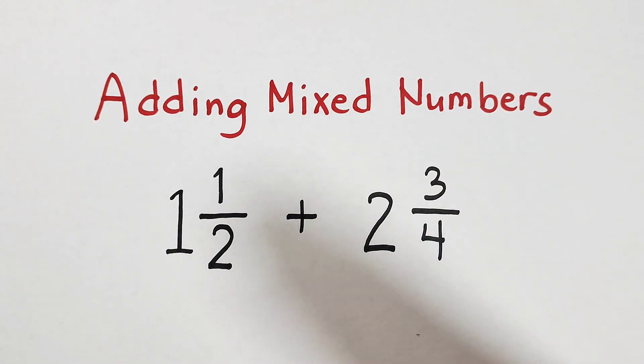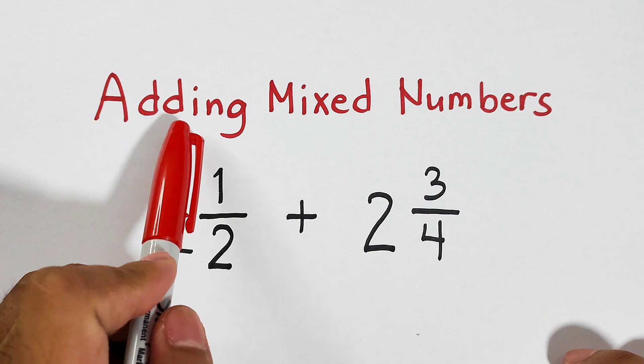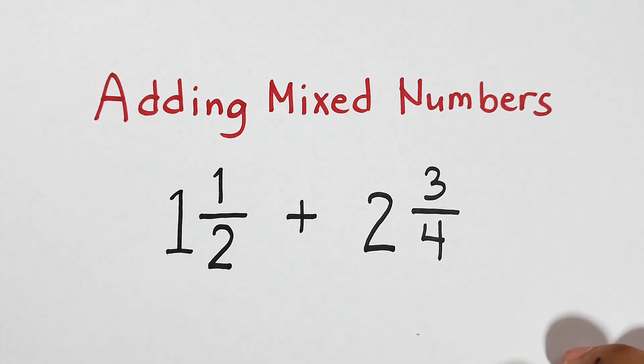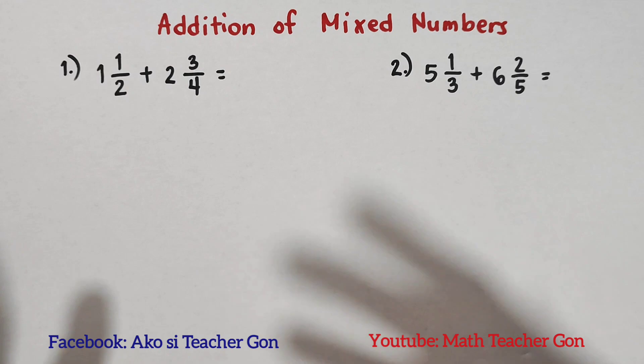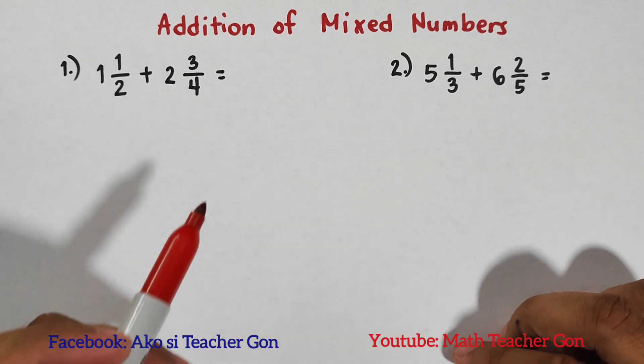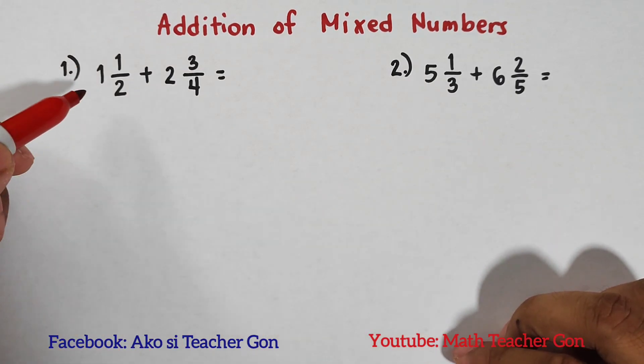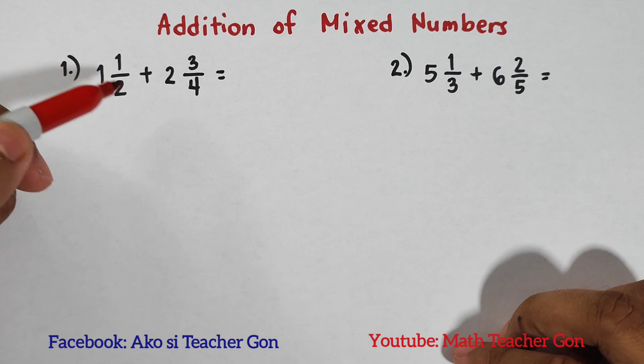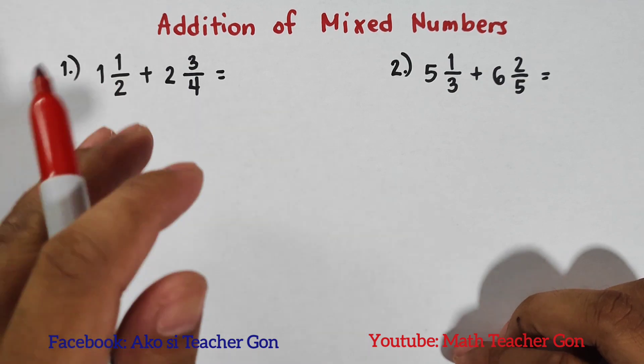Hi guys, it's me, Teacher Gon. In today's video, we will talk about adding mixed numbers. So without further ado, let's do this topic. What we have now are two examples on how to add mixed numbers. Number one: 1½ + 2¾.